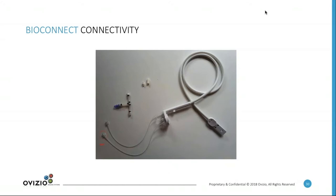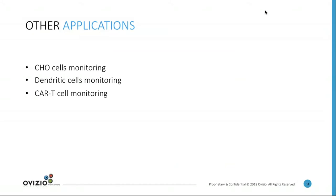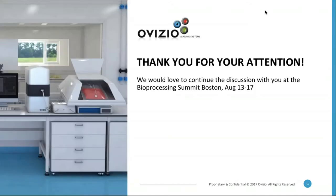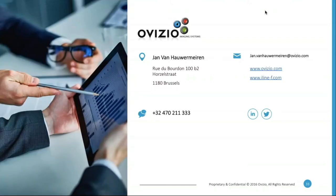Everyone can benefit from the algorithm we have to monitor viral infection kinetics. We also have other applications — the device can be used for CHO cell monitoring, and for immunotherapy cell monitoring including dendritic cells and CAR-T cells. We have some first experience with HEK cells and other cell types. For any specific questions, there should be some time for questions after the presentation. We can also continue the discussion at the Bioprocessing Summit in Boston in August, or contact me via the website or email.